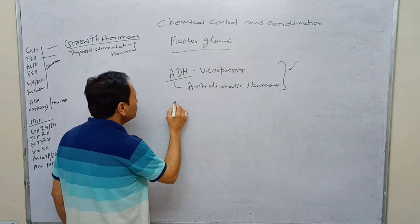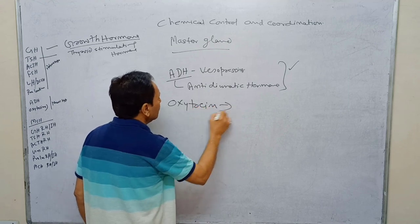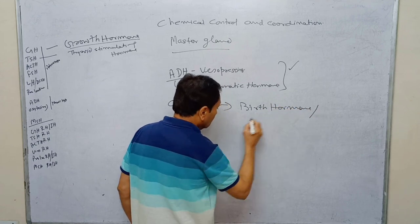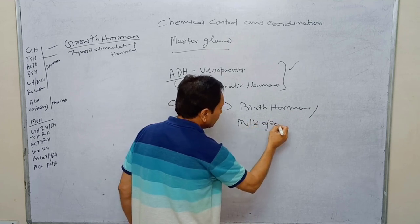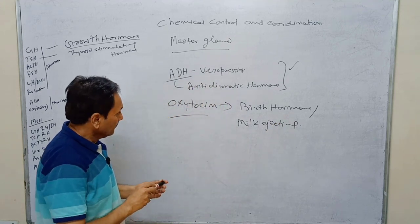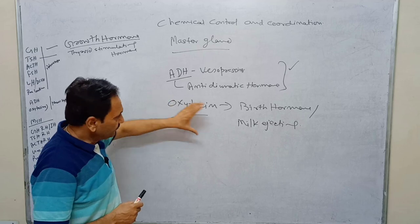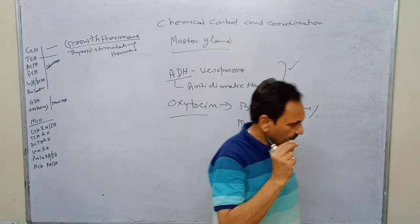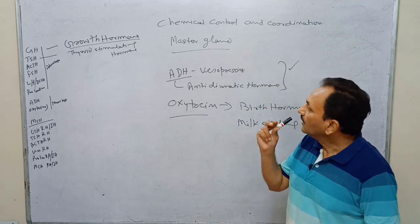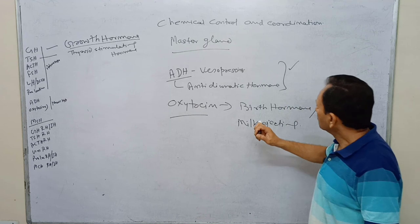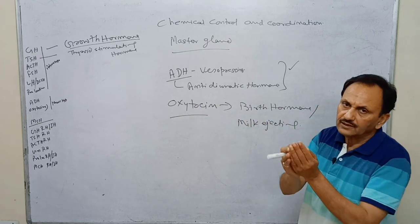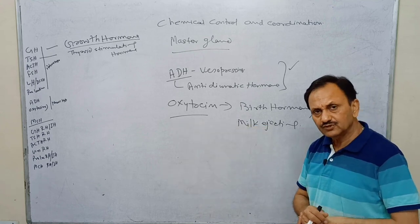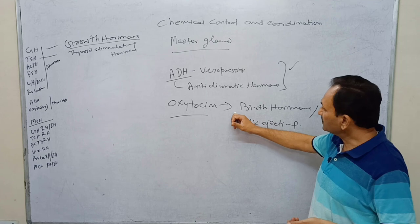Another hormone from the posterior lobe is oxytocin, also called the birth hormone or the milk ejection hormone. When a baby suckles the nipple of its mother, the pituitary starts to release oxytocin, which exerts pressure on the mammary gland to eject the stored milk. Prolactin is responsible for the storage and formation of milk; oxytocin is responsible for the ejection of milk. Without oxytocin, stored milk cannot come out. At the time of parturition, an abundance of oxytocin is released from the pituitary and exerts pressure on the uterus.